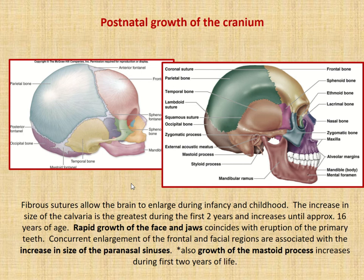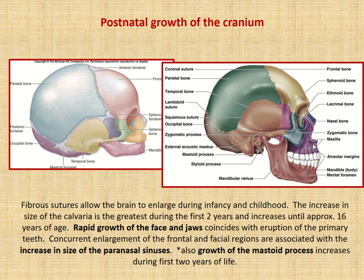There are also other things that happen to the cranium. Looking at a lateral view, you can see how small the face and jaw are in a newborn versus an adult, so you're going to have a lot of growth in the face and jaw. You'll also have teeth developing. Additionally, you have growth of the paranasal sinuses that makes this area larger, and then growth of the mastoid process — in the newborn there's no mastoid process, which makes the facial nerve vulnerable.